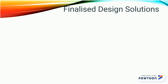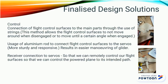Under control, the flight control surfaces are connected to the main part through the use of string. Secondly, aluminum rods are used to connect the flight control surfaces to the servos. Lastly, the receiver is connected to the servos so that we can remotely control our flight surfaces.